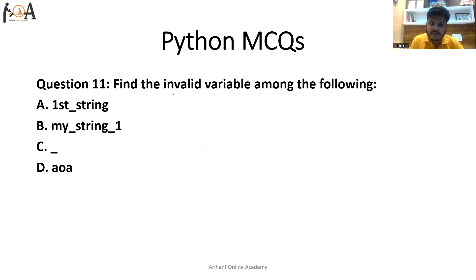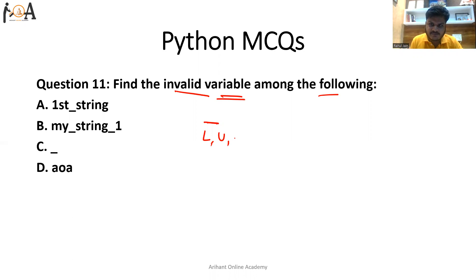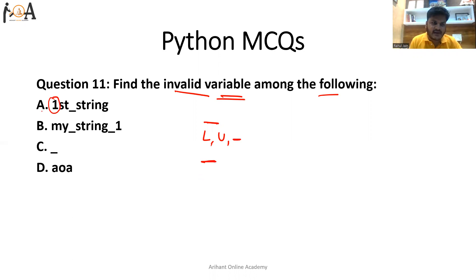The question is: find the invalid variable among the following. The basic rule of declaring a variable is that at the initial position, only lowercase, uppercase, or the underscore special character is allowed. We cannot use a numerical value at the initial position, nor other symbols like star or hash. Here, we have a numerical value at the beginning, which is why it is invalid. Numerical values may be used from the second position onward — that is fine.